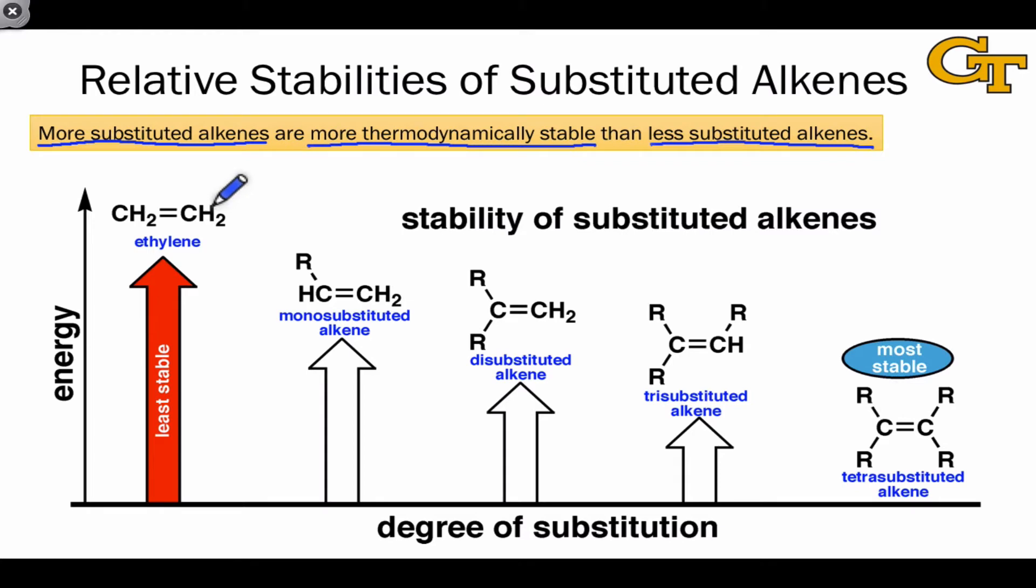Ethylene, which bears no alkyl groups attached to the sp2 hybridized carbons, is the least stable of the alkenes shown here. As we replace the hydrogens of ethylene with alkyl groups, the stability of the alkene increases and its energy goes down. The most stable of all is the tetrasubstituted alkene, which lacks hydrogens entirely on the sp2 hybridized carbons. Its energy is actually implied on the x-axis of this diagram.